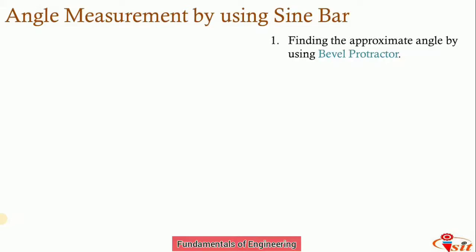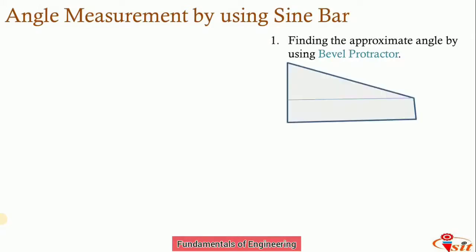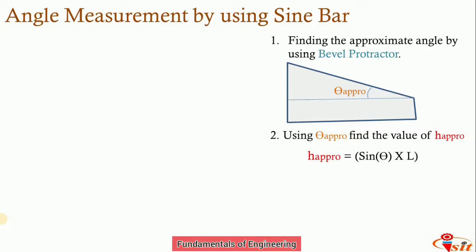To measure an unknown angle of a component, first find the approximate angle using a bevel protractor. Based on that approximate angle θ_approx, calculate the approximate height H_approx using the formula: H_approx = L × sin(θ_approx), where L is the standard center distance marked on the sine bar.